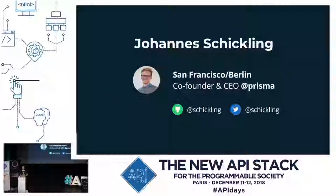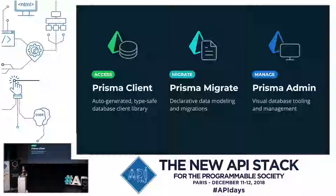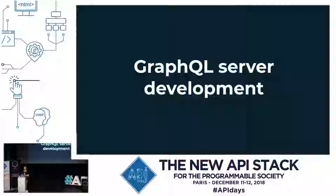My name is Johannes Schickling. I'm the co-founder and CEO of Prisma. You can follow me at Schickling on Twitter. At Prisma, we are building the data layer for modern applications — tools around databases for all kinds of different workflows. We're building Prisma Client, an auto-generated type-safe database client library, a replacement for your traditional ORM. We're also working on Prisma Migrate, a declarative way to model and migrate your database. And soon we'll launch Prisma Admin, a visual database management tool — a modern version of phpMyAdmin — that you can even extend with your own React components.